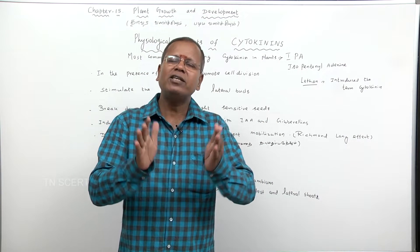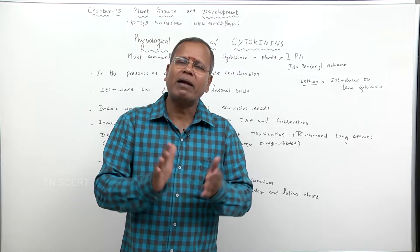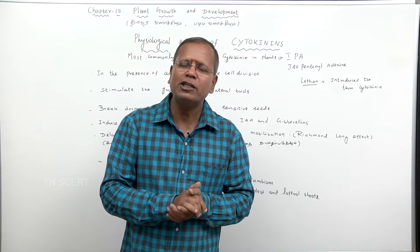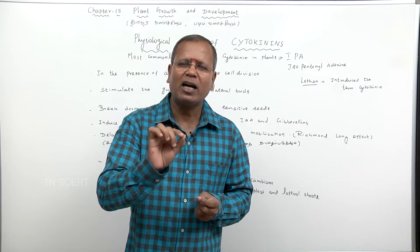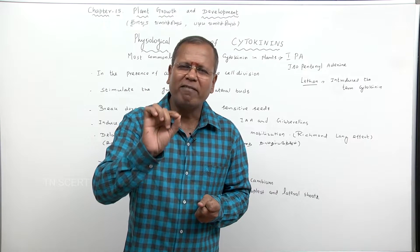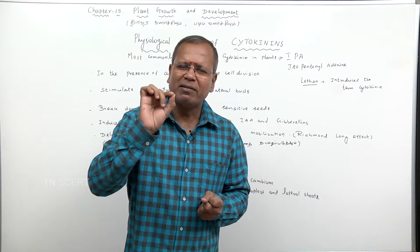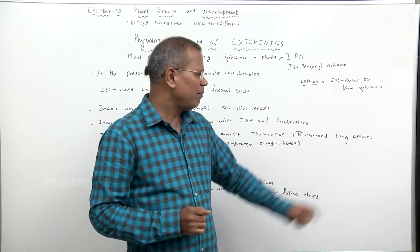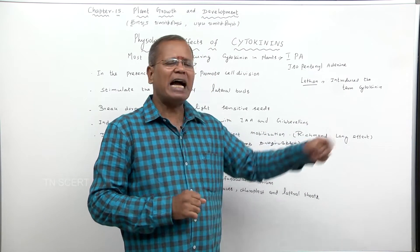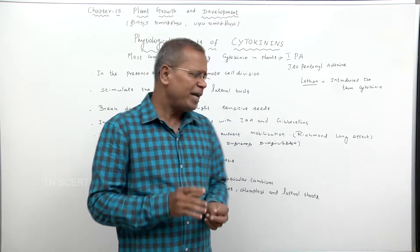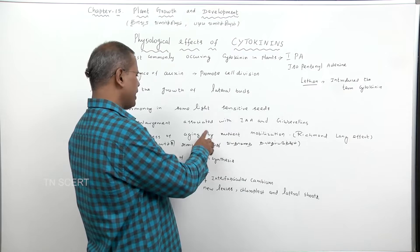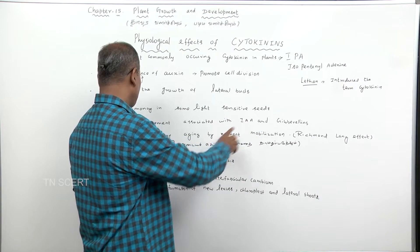The delay of the aging process in plants is called the Richmond-Lang effect. This occurs through nutrient mobilization — nutrients are redistributed to keep the plant from aging.